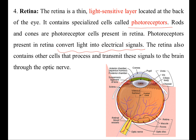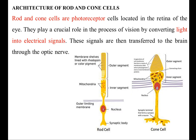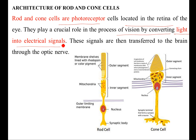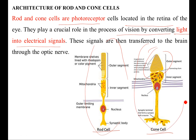The retina contains two types of photoreceptors: rod and cone cells. They are called photoreceptors and are located in the retina. They play a very important role in vision by converting light into electrical signals that are transferred to the brain through the optic nerve. As the name suggests, rod cells look like a rod and cone cells look like a cone.